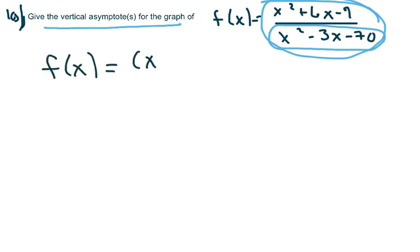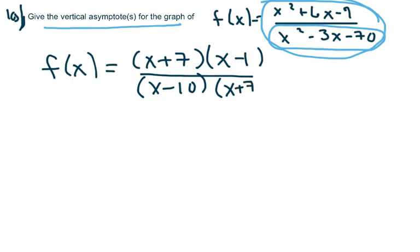And I'm going to get x plus 7 times x minus 1. And the denominator, so 70 is going to be x minus 10 times x plus 7. Now if you look at this, the domain is all real numbers where x cannot be 10 and x cannot be negative 7.